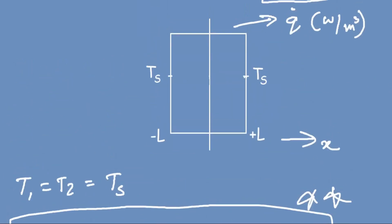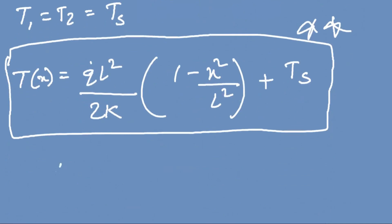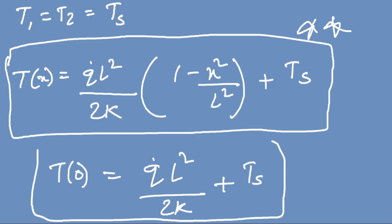The temperature profile will be parabolic. The maximum temperature occurs at x equals 0. Substituting x = 0 into the equation gives T_max equals q_dot·L² divided by 2k plus Ts. This is the maximum temperature within the slab.